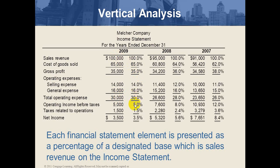Continuing the vertical analysis recap: operating income is 5%, which is 5,000 divided by 100,000. Tax is 30% of the operating income — so 30% of 5,000 equals 1,500, which represents 1.5% of sales. Net income after tax is 3,500, representing 3.5% of sales revenues.